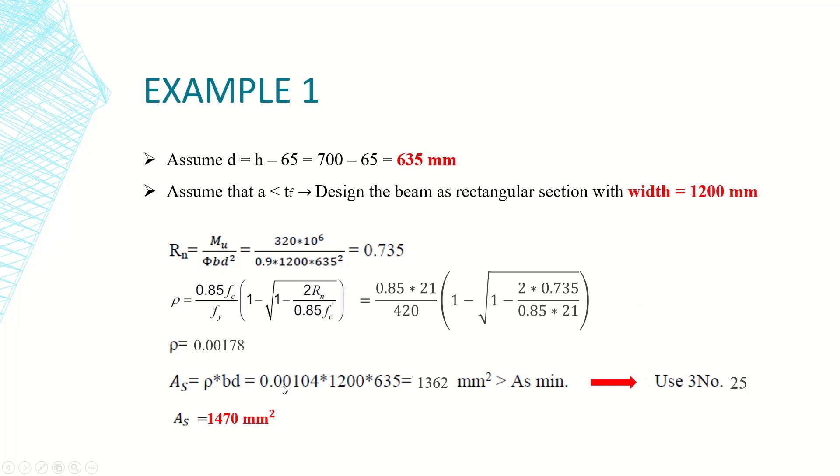I think here rho should be 0.00178 also. I'll correct it in the PDF version of this file. So rho is 0.00178 times 1200 times 635.